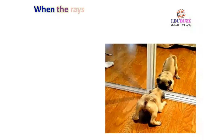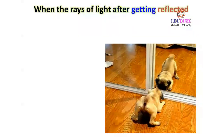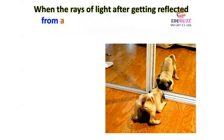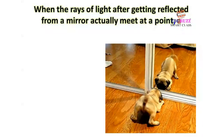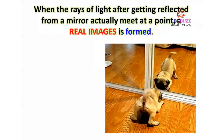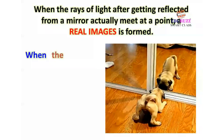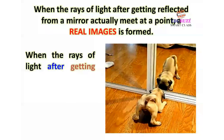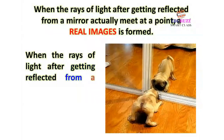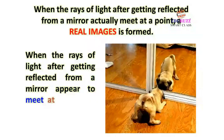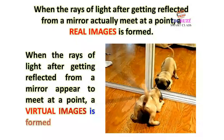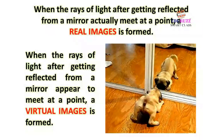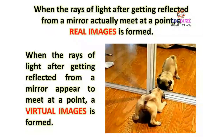When the rays of light, after getting reflected from a mirror, actually meet at a point, a real image is formed. When the rays of light, after getting reflected from a mirror, appear to meet at a point, a virtual image is formed.